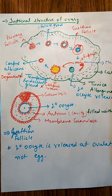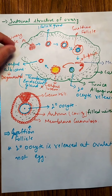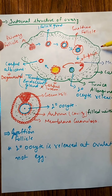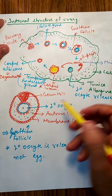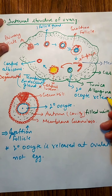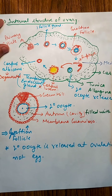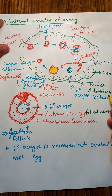We will discuss the internal structure of the ovary. This is a typical female ovary, present in the abdominal cavity. As you all know, the outermost layer of the ovary is tunica albuginea. Just as the testis is covered by tunica albuginea, in the same way the ovary is also covered with the layer known as tunica albuginea.